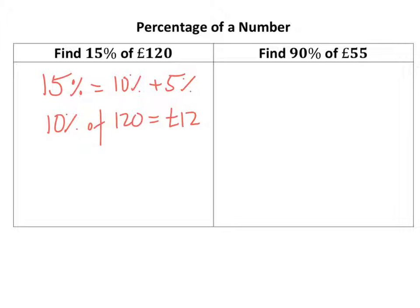Now if I know 10%, I can find 5% nice and easily, because that's going to be half of what 10% is. Add them up, I get £18. That's one way of doing it - that would be the way to do it without a calculator.